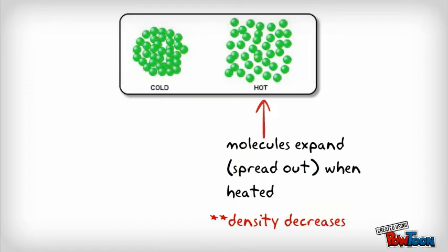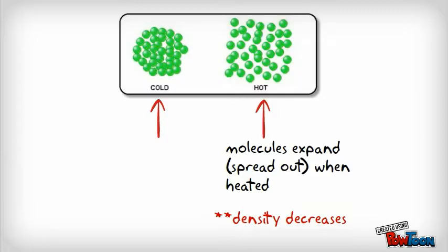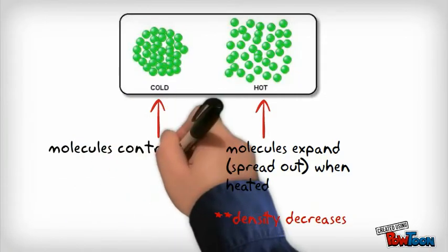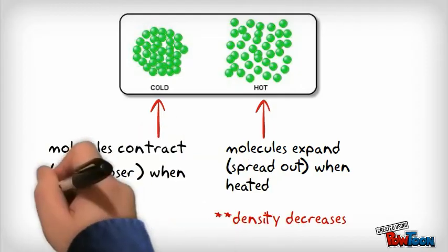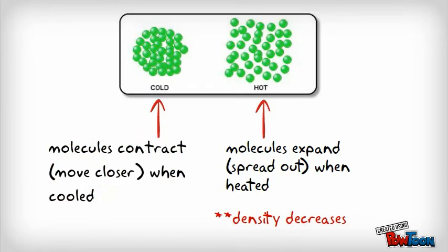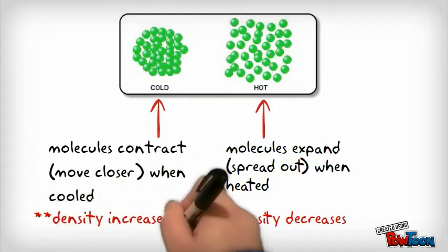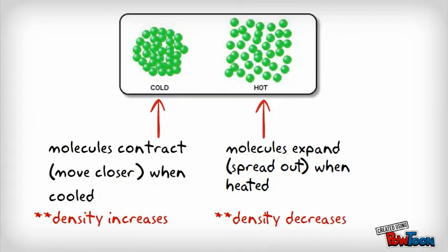When most materials are cooled, the opposite happens. When you lower an object's temperature, the molecules contract and move closer to each other. This causes the object to become more dense because now the matter is more tightly packed.